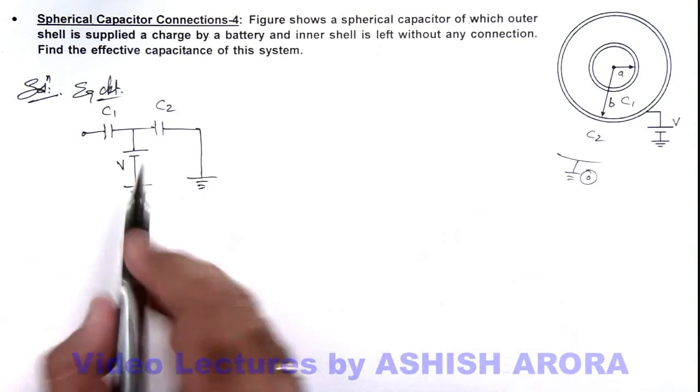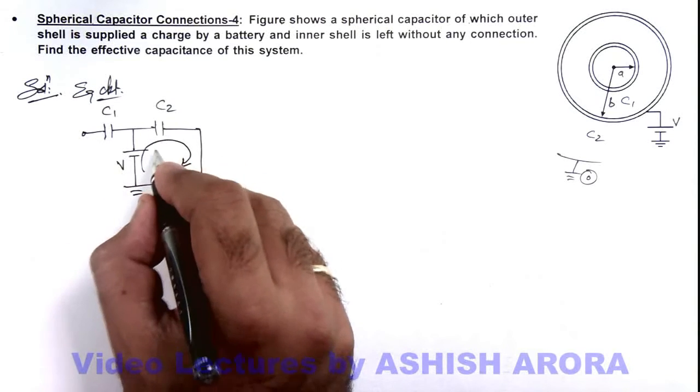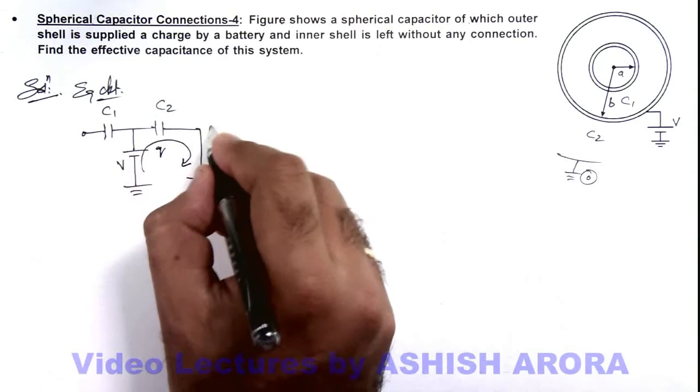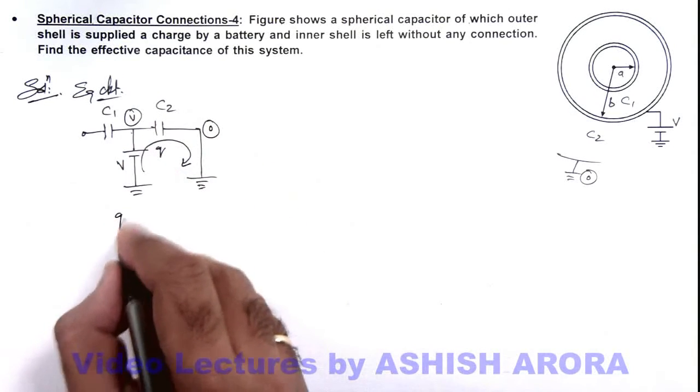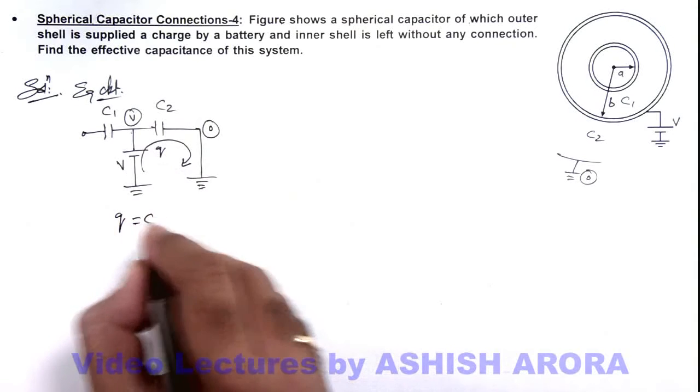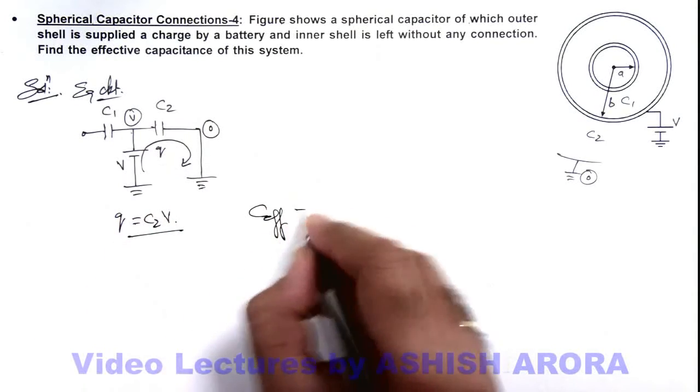In this situation, the battery will only supply the charge in this loop, and only charge will be received by C2, where potential at this point is zero and at this point is V. So charge on this system will be C2 times V. We can write that the effective capacitance here is only C2.